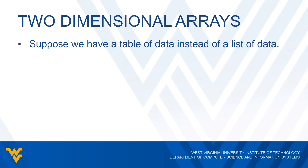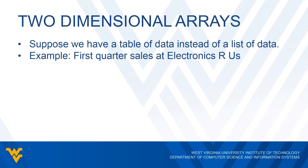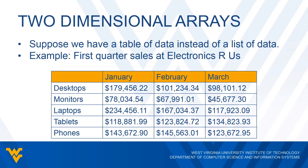Let's suppose we have a table of data instead of a list. Maybe we're dealing with first quarter sales at a business called Electronics R Us. Here's some arbitrary data — these numbers are made up. Let's say this business is selling desktops, monitors, laptops, tablets, phones, and so forth. And these are the sales for January, February, and March.